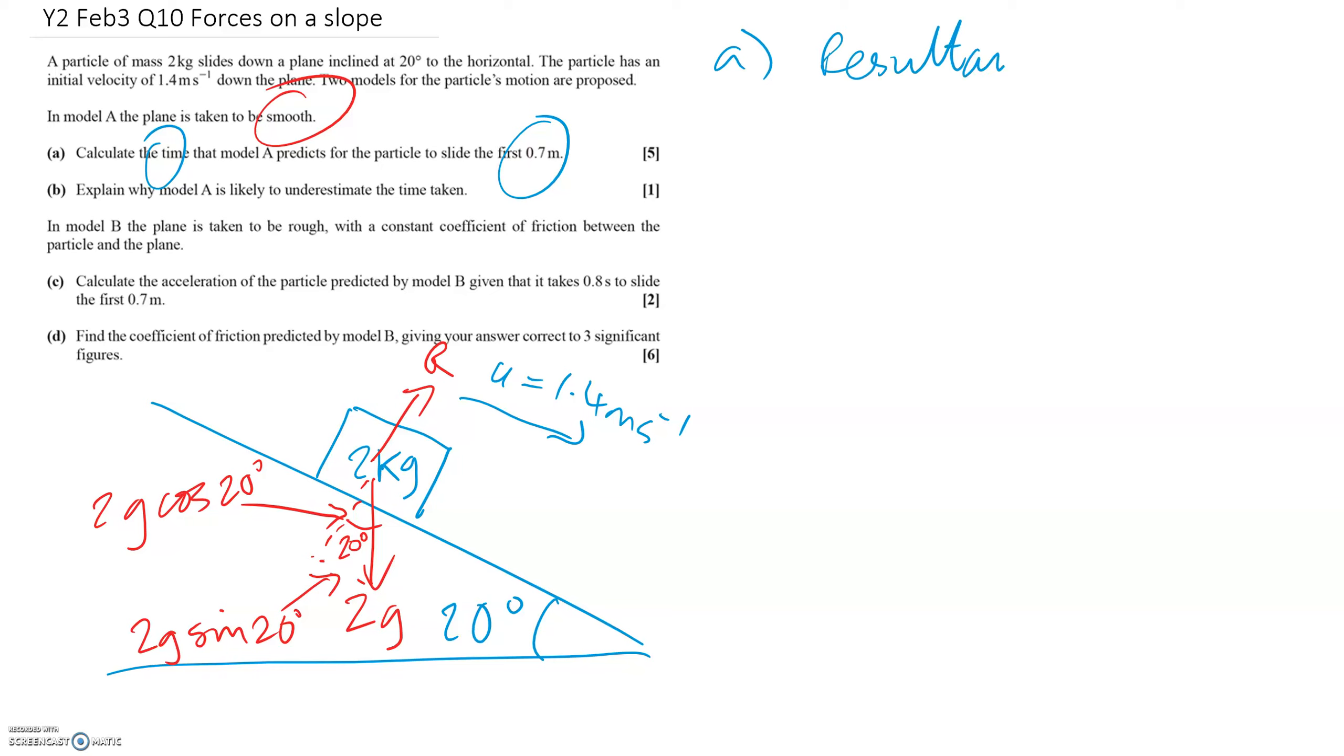So resultant force equals ma. It's sliding down the slope, so let's resolve in this direction parallel to the slope. All the forces going in that direction, there's only one, and that's the 2g sin 20 force. There are no forces acting in the other direction going up the slope. So that will equal the mass, which is 2 times acceleration. And so the acceleration is 2g sin 20 divided by 2, which is obviously just g sin 20.